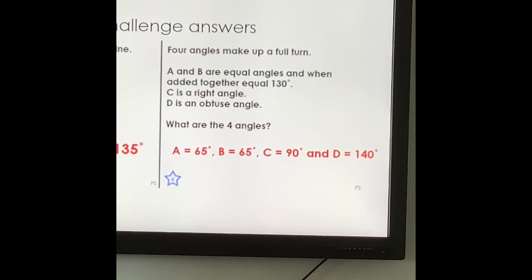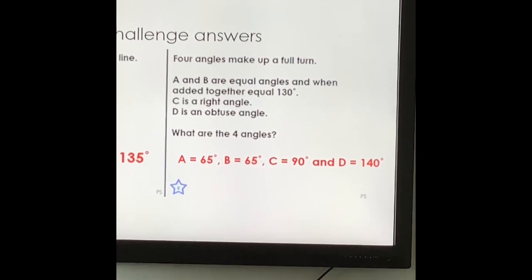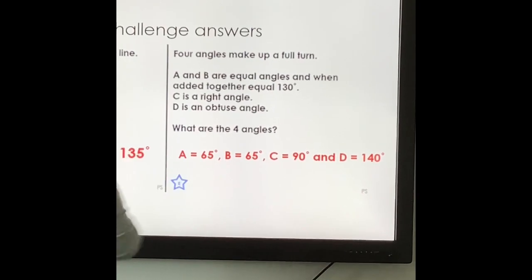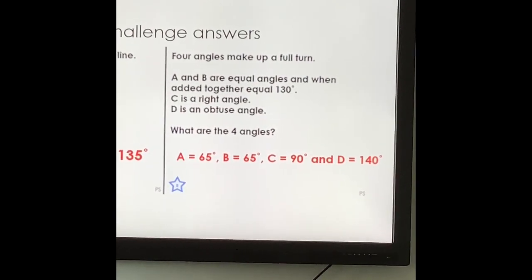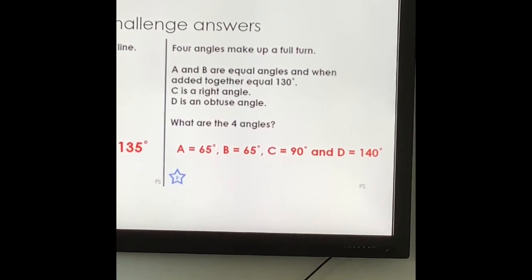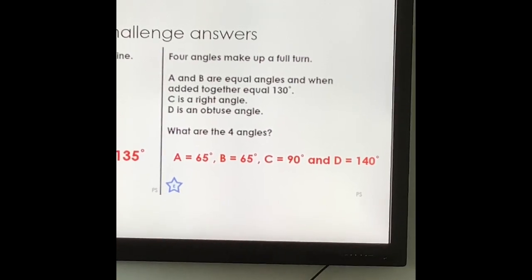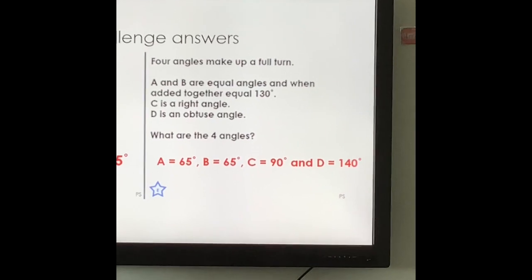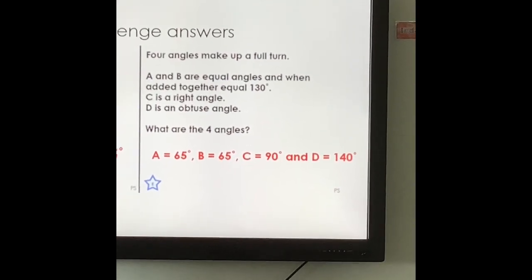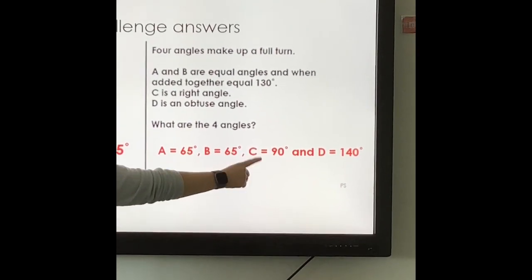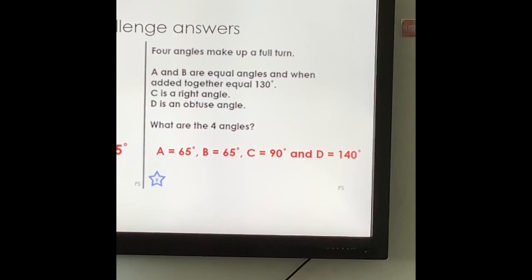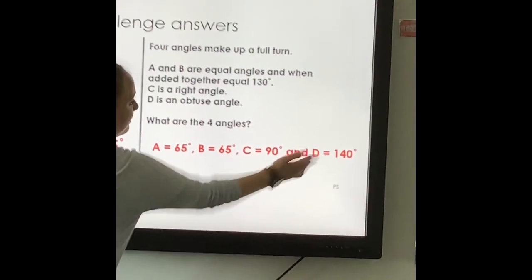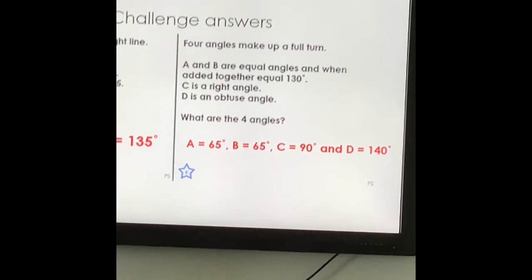C is then a right angle. Brilliant. You know that's 90 degrees straight away. So you've got C. Finally D is obtuse so you know it's going to be bigger than 90 degrees but less than 180. But also you know that your full turn is 360. So if you add your known angles together and take away from 360 you should be left with 140. Well done.